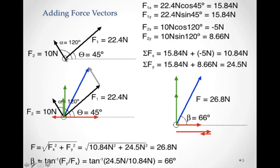The way we handle this algebraically — to determine the magnitude and angle of this force vector — is to take each of the two vectors and break them into their horizontal and vertical components first. Once we do that, we add up the horizontal parts and the vertical parts, then use the Pythagorean theorem and inverse tangent to find our overall resultant force and angle.